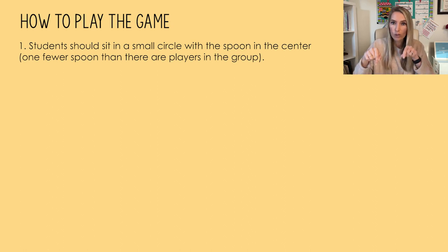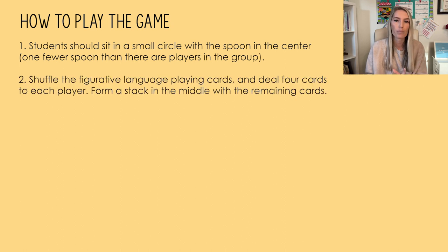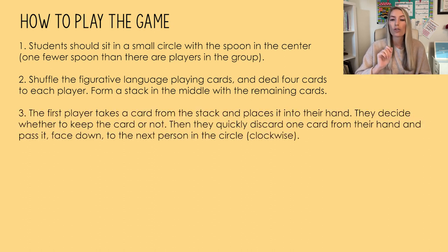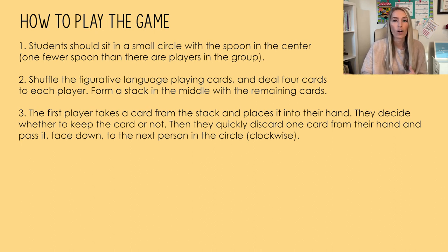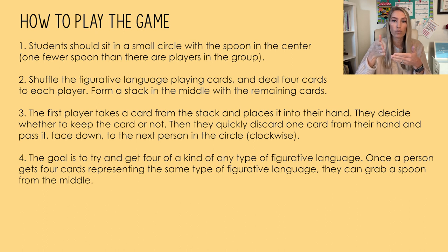Students will sit in a small circle with the spoons in the center. You'll have one fewer spoon than there are players in the group. You can also use markers or whatever you have on hand in place of spoons. Shuffle the playing cards and deal four cards to each player, then form a stack in the middle with the remaining cards. The first player takes a card from the stack, decides whether to keep it, then quickly discards one card face down to the next person going clockwise. The goal is to get four of a kind of any type of figurative language in your hand.